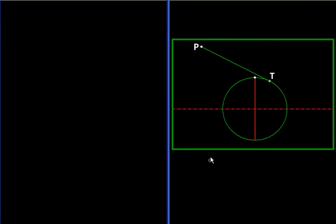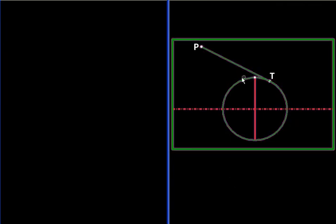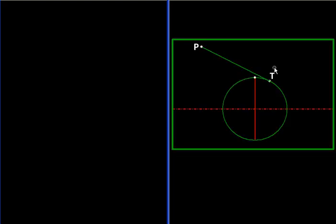So suppose this was a circle given to us and the point P in its plane from which we have drawn this tangent which is tangential at T. And suppose this whole diagram is drawn on this sheet of paper.